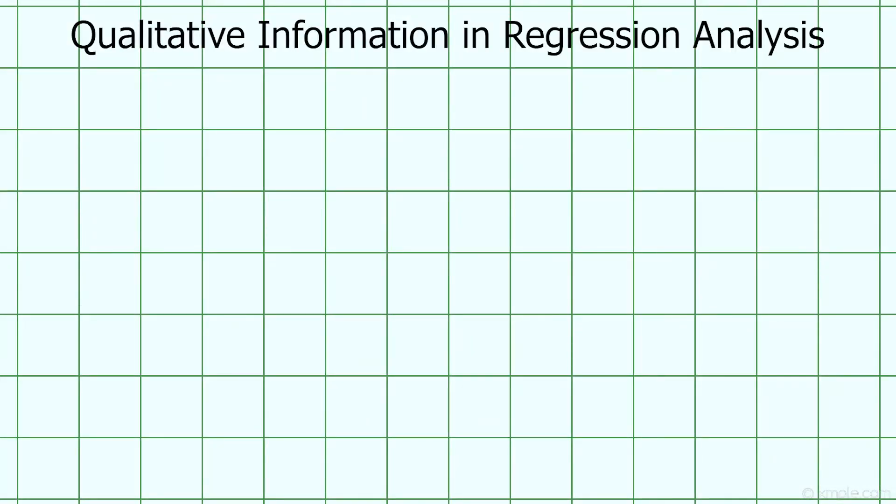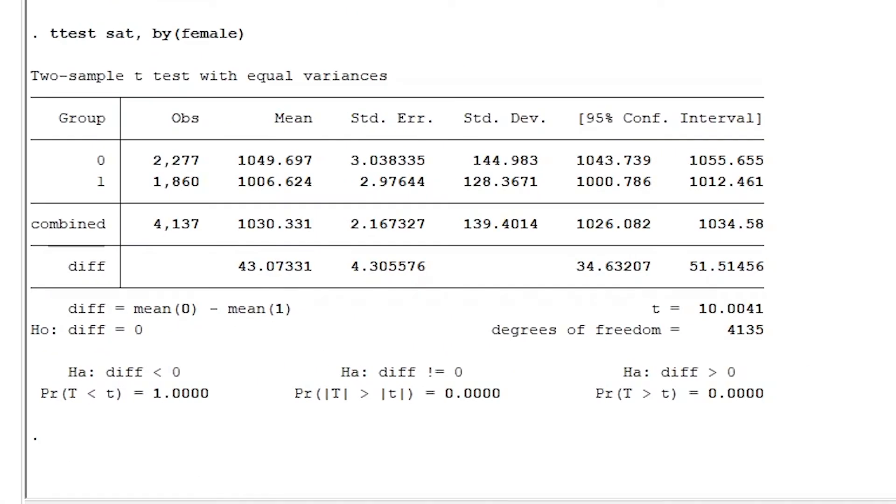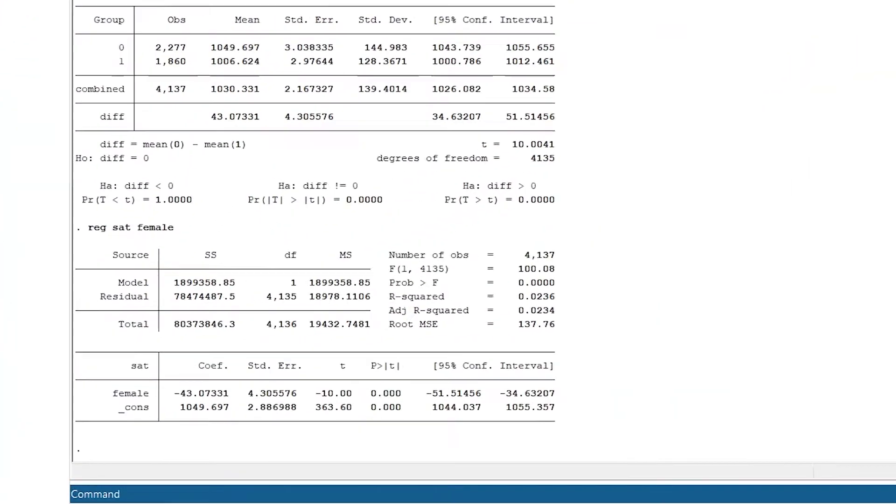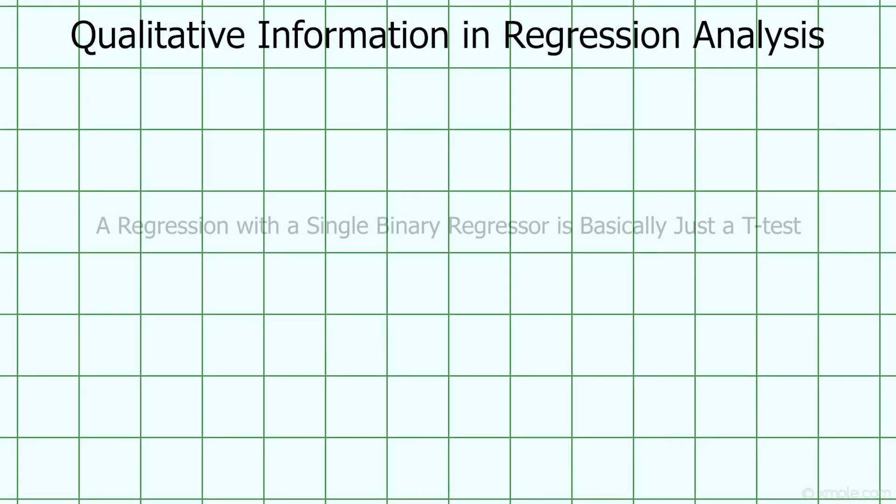Let's start simple. How do females compare on the SAT compared to males? Previously, we might answer this question by taking the average scores of females and males in our sample and performing a two-sample t-test. Doing this shows that the average female score is 43.07 points lower than the average male score, and that this difference is statistically significant. However, what if instead we regress SAT scores on a binary variable that equals one if a student is female and zero otherwise? Well, doing so gives us these results. Does this coefficient look familiar? It's equal to the difference in means between females and males. And look, it's statistically significant too, just like our t-test.